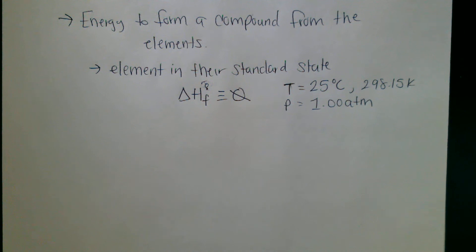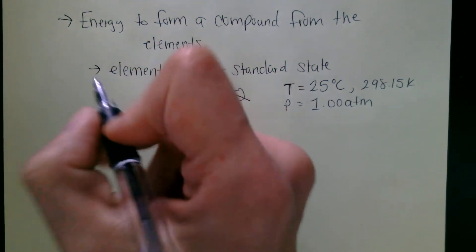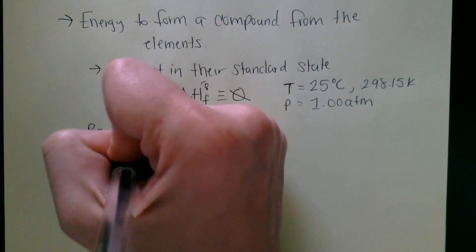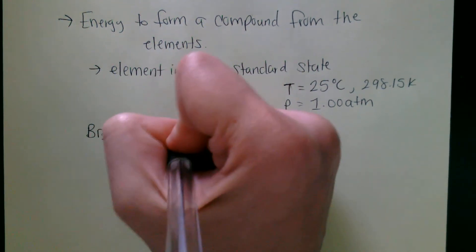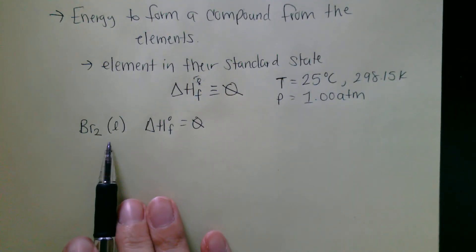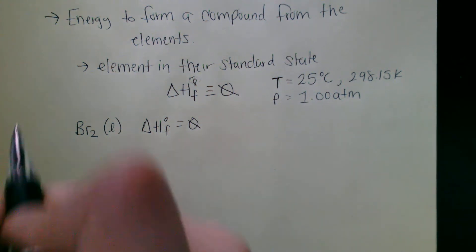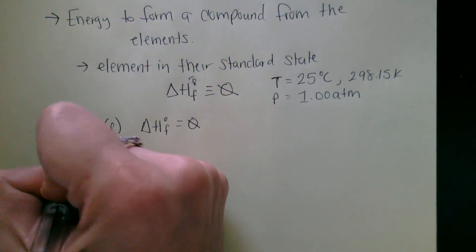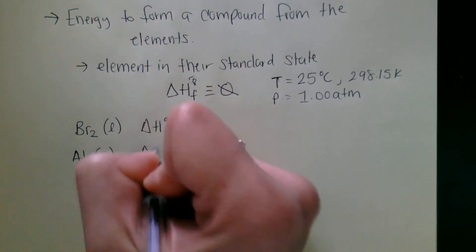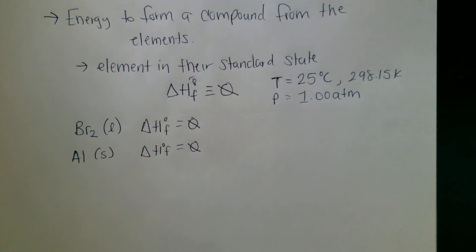For example, the element bromine. Bromine in its standard state is a liquid, so its enthalpy of formation equals zero. This is how we find bromine in its elemental standard form — it doesn't cost us any energy to make it because it's already in its baseline elemental form. Similarly, aluminum exists as a solid, so its enthalpy of formation is also zero.